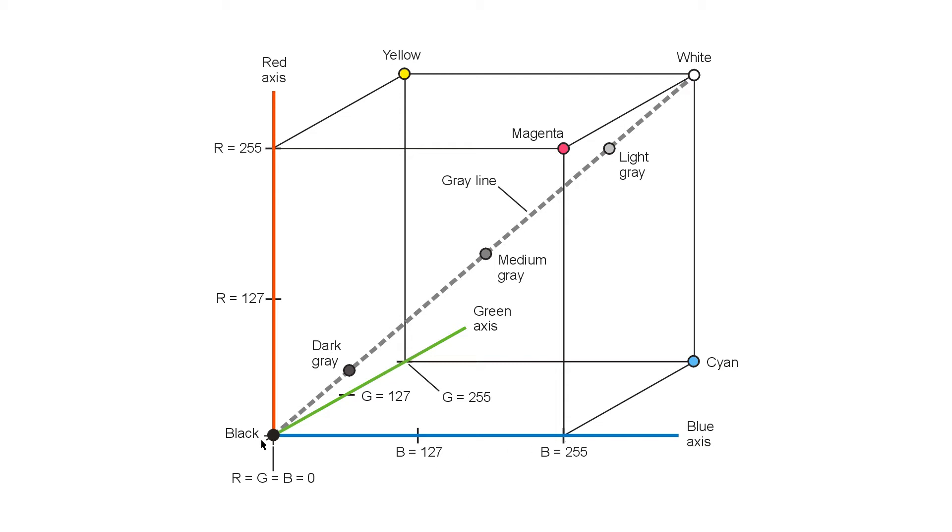So, red 0 to 255, green 0 to 255, and blue 0 to 255, gives you a total of 16,777,216 different points within this cube, each point corresponding to a unique color or hue.